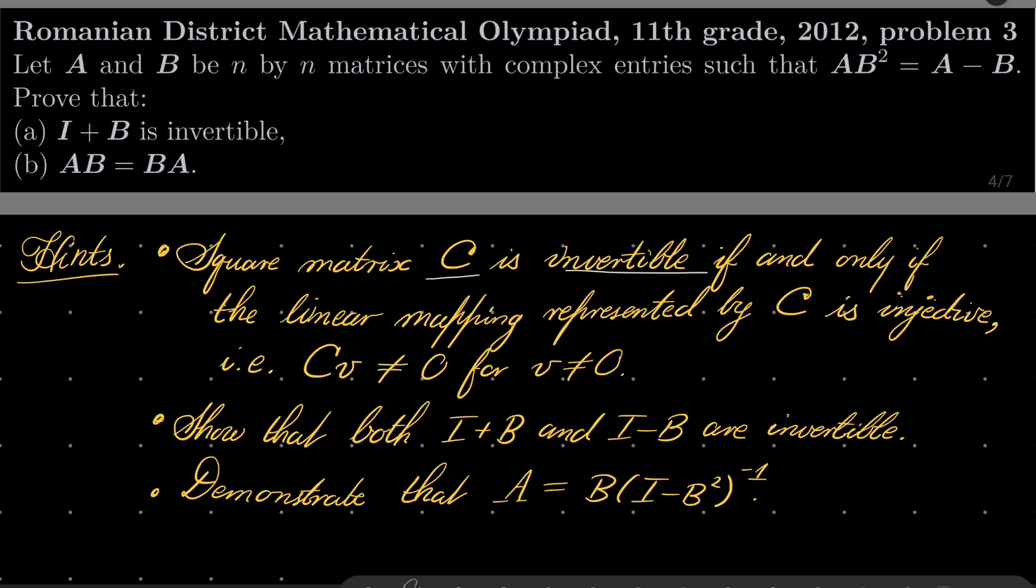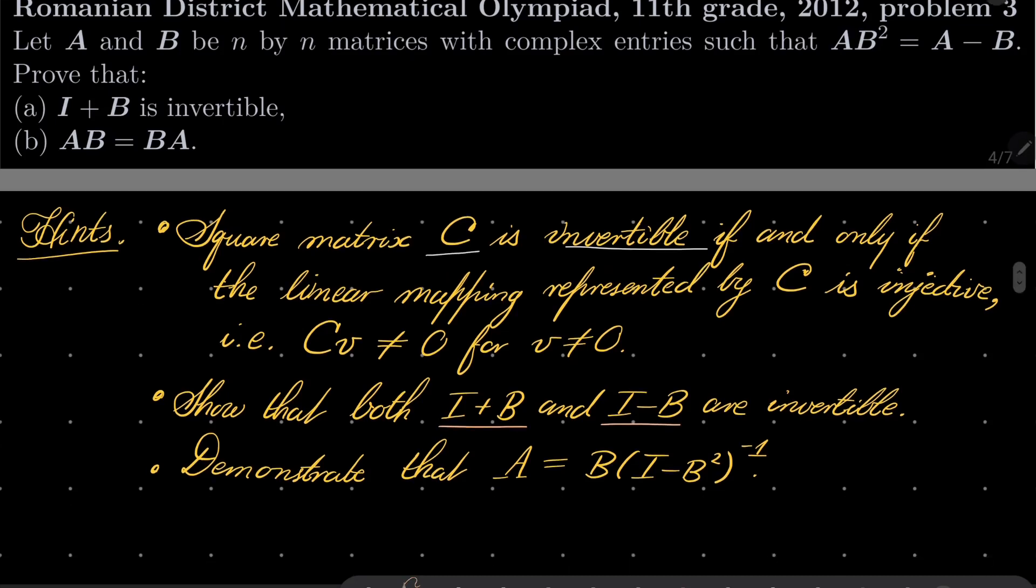For part B, show one more fact that not only I plus B is invertible, but I minus B is also invertible. And then from the first equation, you should be able to derive this, and somehow show that AB equals BA. So try it yourself.